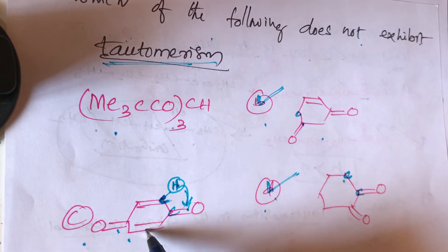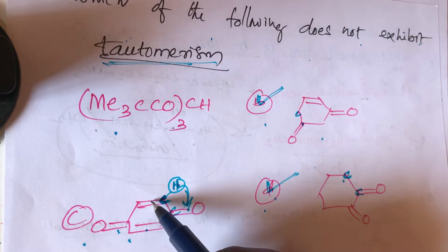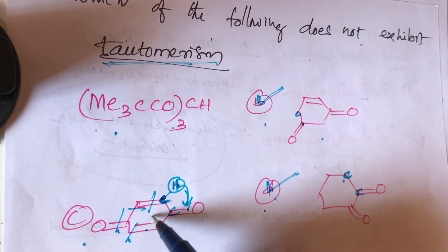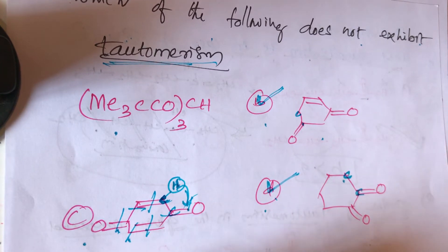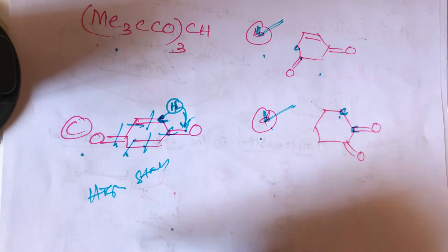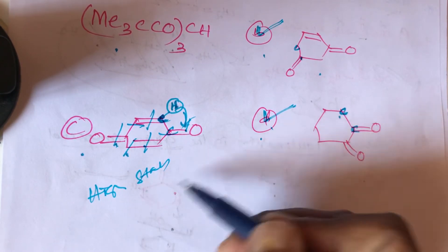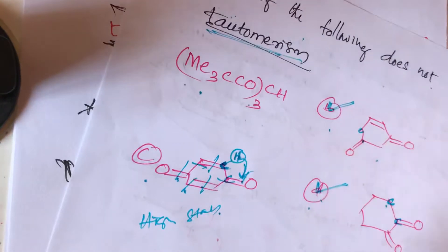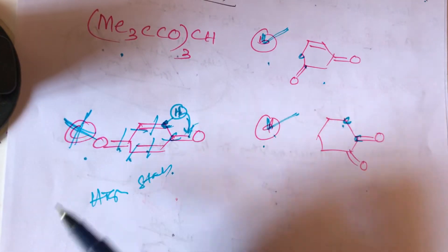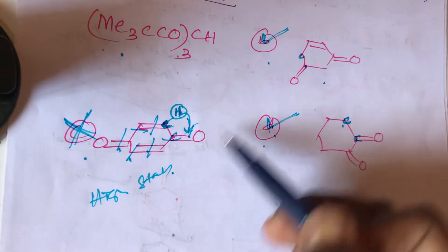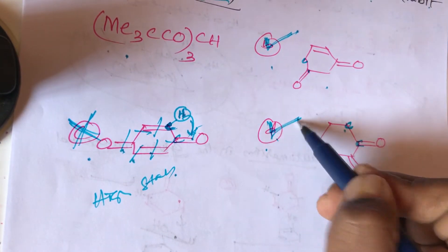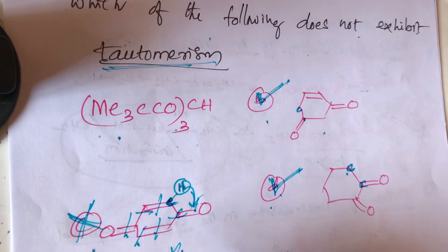One more thing about compound C: it is highly stable because of conjugation — double bond, then single bond, then double bond, then single bond, then double bond. So this highly stable compound does not participate in tautomerism. The C compound does not participate in tautomerism.